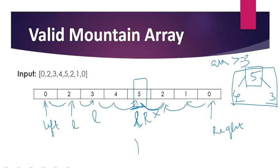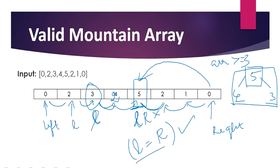We check if the left pointer equals the right pointer — if so, it is a valid mountain array. If there's a change, for example a value of 2 causing left to stop at 3 (since the next number is less than 3), then left stays there and only right reaches the middle — they won't be equal. The two pointers will meet at the middle position if and only if both the left and right sides are in strictly sorted order.